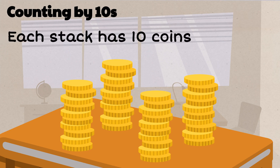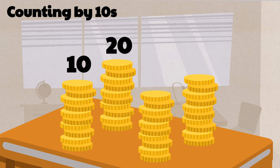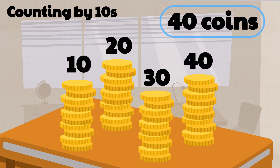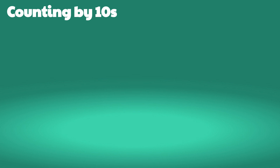So we'll be counting by tens: ten, twenty, thirty, forty coins. Notice that the first digits are one, two, three, and four — just like counting single digits and then adding zero at the end of each number.